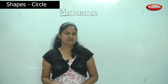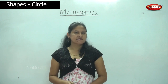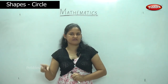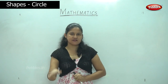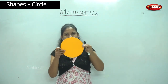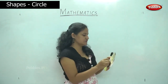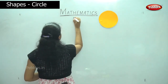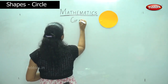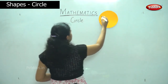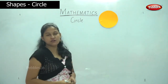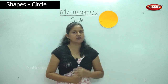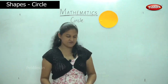Our next shape is the circle. We have seen examples of circles — I already told you about the wheels of the bus. We sang a rhyme called 'The Wheels of the Bus Goes Round and Round,' and the circle goes round and round. It has no sides and no corners. Today let us see some examples of circles that we see in our everyday life.